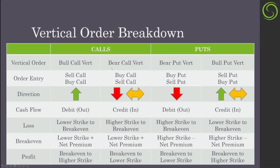So we got a bear call vertical. Not much different than the bull call vertical — you're going to have limited gains and limited losses. How you want to set this up is you sell the lower strike call and then buy the higher strike call. You're looking for the stock to either go down or just sideways and collect the premium. Your loss is from the higher strike to the break even, and your gain is from the break even to the lower strike. For the call side, your break even is the lower strike plus the premium.